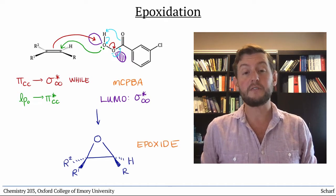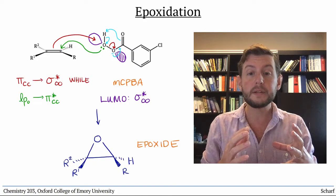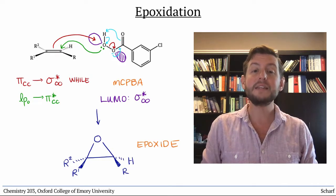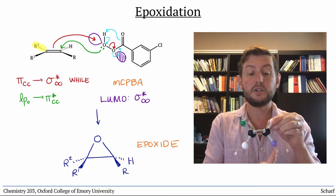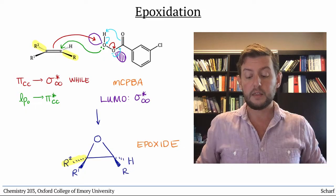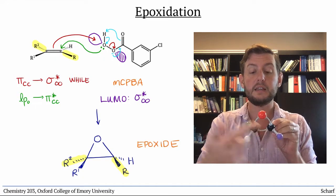Like bromonium ion formation, this all happens in one fell swoop, a single concerted step, and that step is stereospecific. So if the alkene had two substituents trans to each other, then those substituents remain trans in the epoxide product.